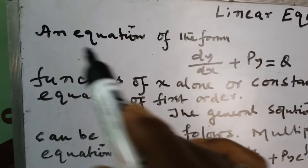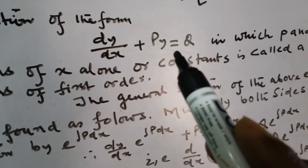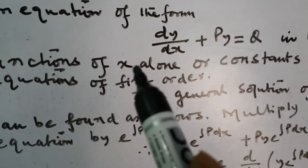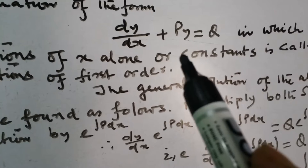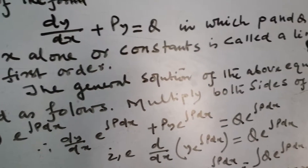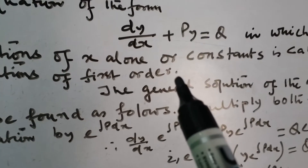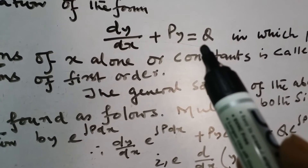Linear equation: an equation of the form dy/dx plus py equals q, in which p and q are functions of x alone, or constants, is called the linear equation of first degree.